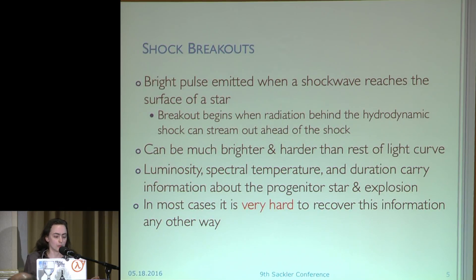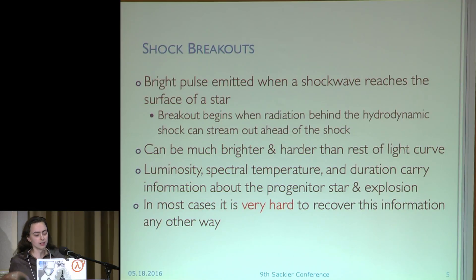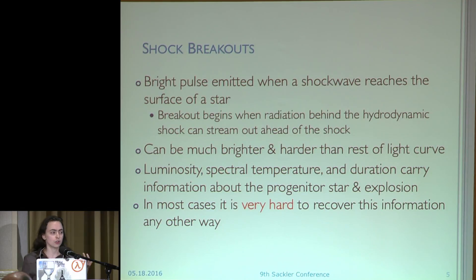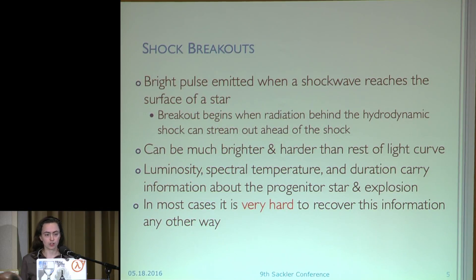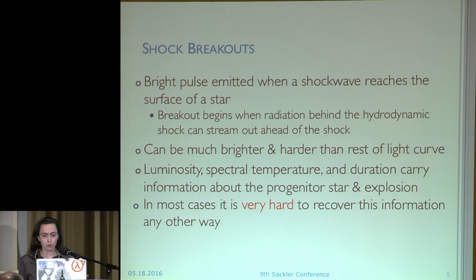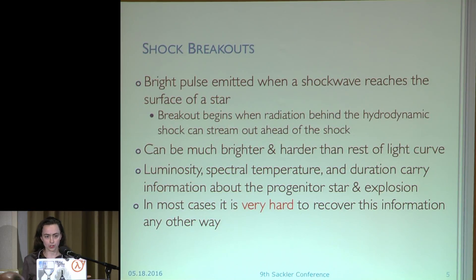I'm going to gloss over shock breakout because most people here are familiar with them. The shock breakout is a bright flash of light emitted when the shock wave reaches the surface of the star. It occurs when the radiation that has been trapped behind the shock through its propagation is now able to stream out in front of that shock, giving you a bright pulse of radiation released on a fairly short time scale. They tend to be much brighter and spectrally harder than the rest of the light curve, and they carry information about the progenitor star. The properties of the breakout flash are set by the explosion and by the star it's been moving through, so you can get information out of the breakout that is otherwise wiped out in the explosion that destroys the star.